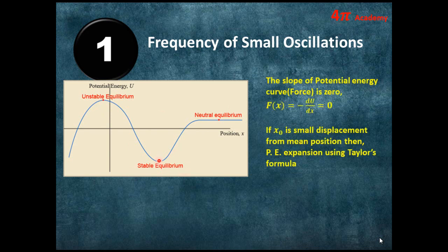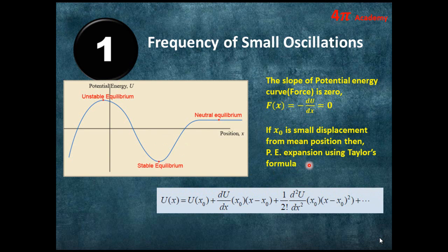At the position of stable equilibrium and also at the unstable equilibrium point, the slope of the potential energy curve — meaning the force at this position — is zero: dU/dx = 0 at both stable and unstable equilibrium. If x₀ is the equilibrium position and the particle oscillates about it, we can expand the potential energy using Taylor's formula: U(x) = U(x₀) + (dU/dx)|_{x₀} · (x − x₀) + (1/2)(d²U/dx²)|_{x₀} · (x − x₀)² + ...